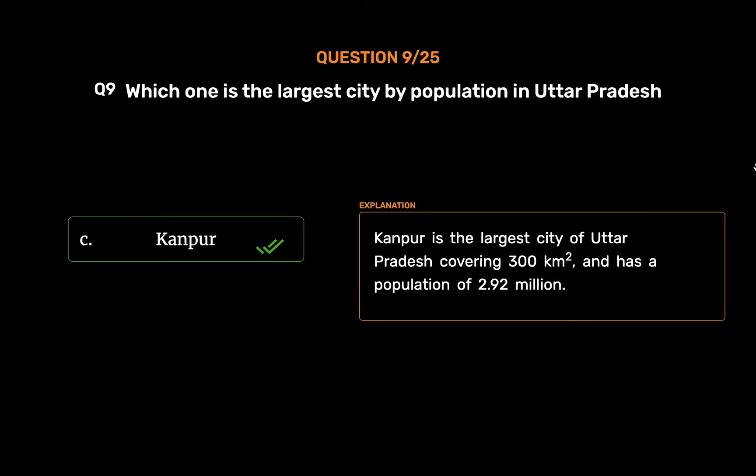Kanpur is the largest city of Uttar Pradesh, covering 300 square kilometers and has a population of 2.92 million.